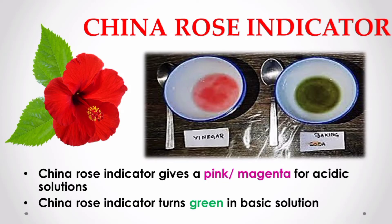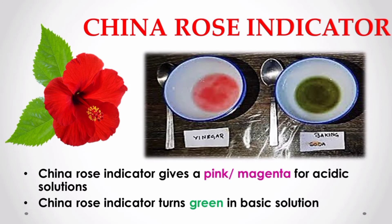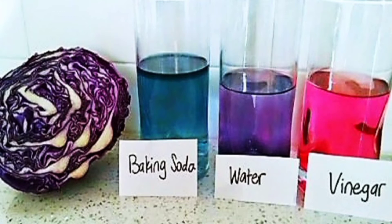Another natural indicator is the china rose indicator, which is very easy to make. Put some petals of red hibiscus in hot boiling water and keep it for some time so that the color of the red petals gets infused in the water. Your china rose indicator is ready. China rose indicator gives a pink or magenta color for acidic solutions and a green color in basic solutions. Red cabbage is also a natural indicator which shows different colors in acidic, basic, and neutral mediums.